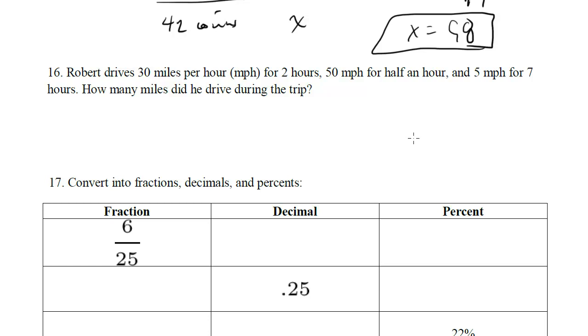Robert drives 30 miles per hour for 2 hours, 50 miles per hour for half an hour, and 5 miles per hour for 7 hours. How many miles did he drive during the trip? This is a rates question.